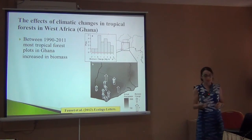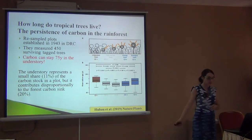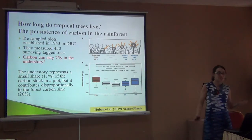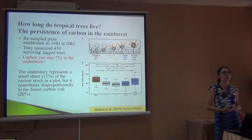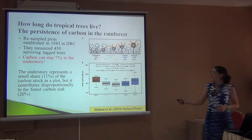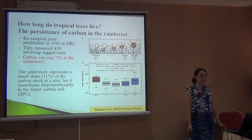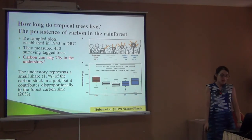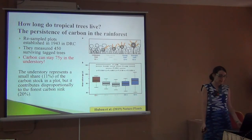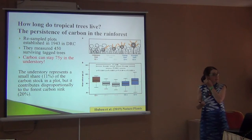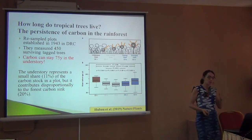I want to show a really cool paper that came out last month by a colleague working with this database. It's not just about how much carbon we have, but also how long it stays there — how long do tropical trees live and store carbon? He looked at plots established in 1943 in D.R. Congo, remeasured 450 trees, counted the rings, estimated growth over time, and classified trees into four groups.